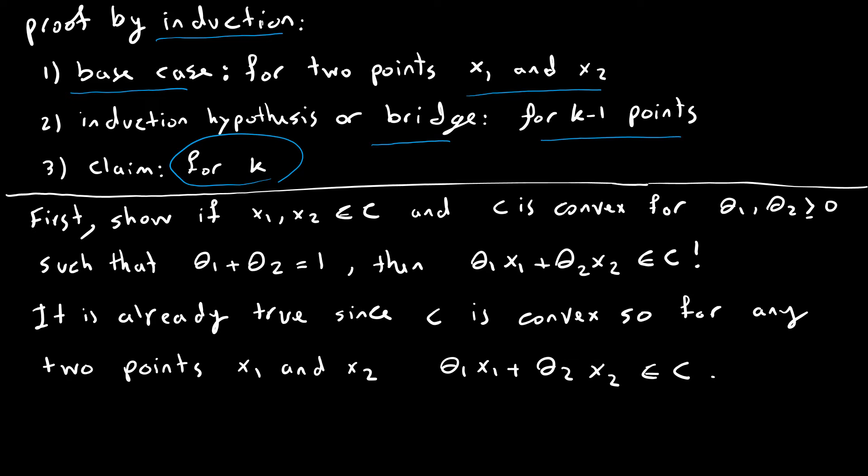The base case can be shown by picking two points in C and show that the convex combination of these two points is in C. But we know this is true because the set C is convex in whatever pair you pick. The convex combination is back in C. So we have no problem proving the base case.